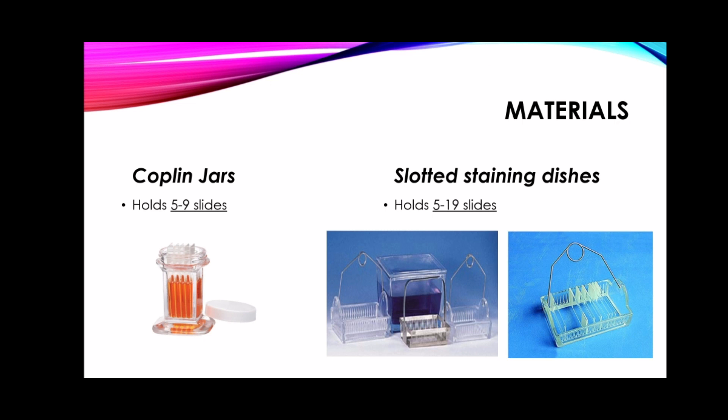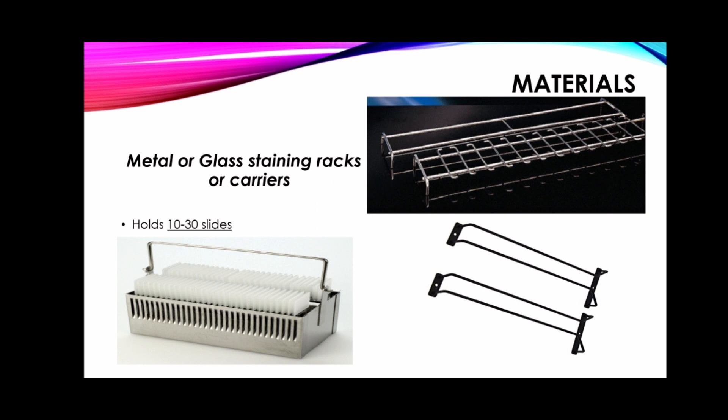For staining, several materials are needed, including a Coplin jar that can hold 5 to 9 slides, slotted staining dishes which hold 5 to 19 slides over which different solutions are poured with slides placed on end singly or in staggered fashion, and metal or glass staining racks or carriers holding from 10 to 30 slides upright, which are transferred to appropriately sized glass dishes containing the staining solutions.